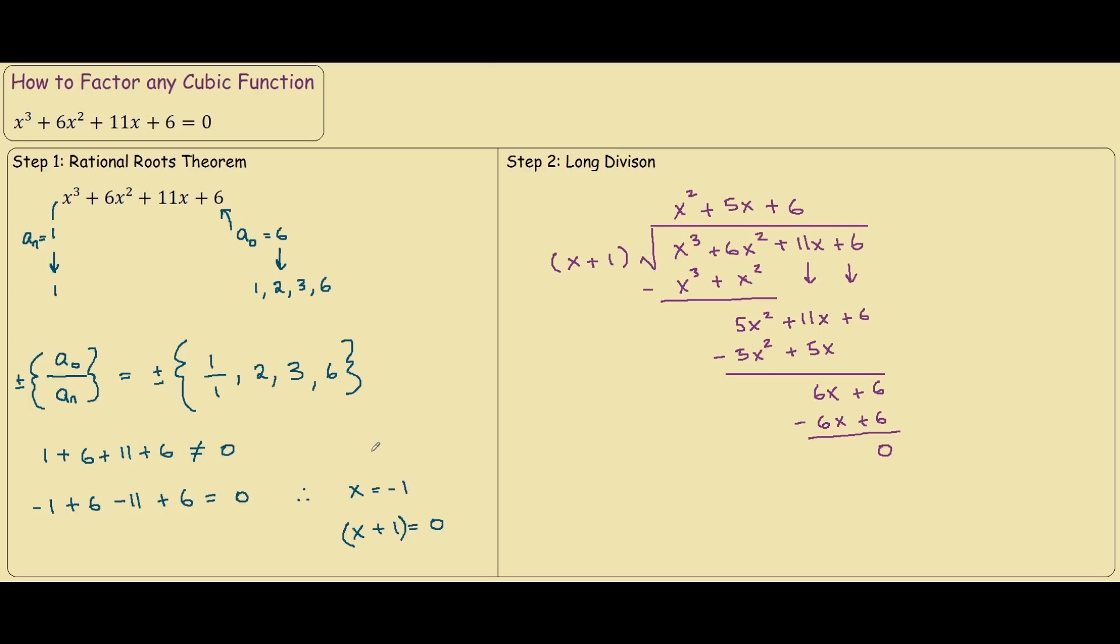So, if we combine our answers from the first step and second step, we have x plus 1 times x squared, plus 5x, plus 6.